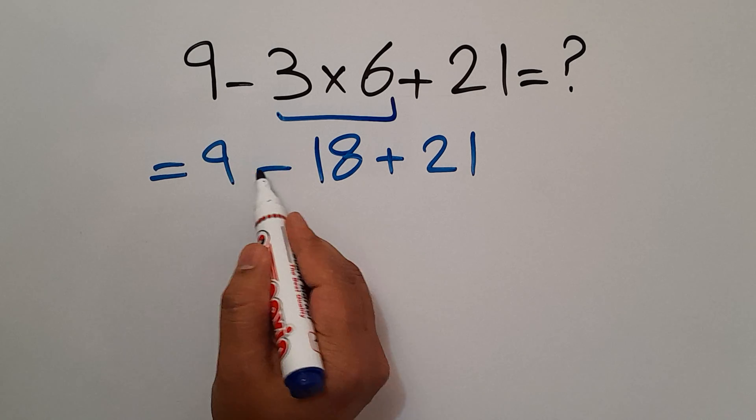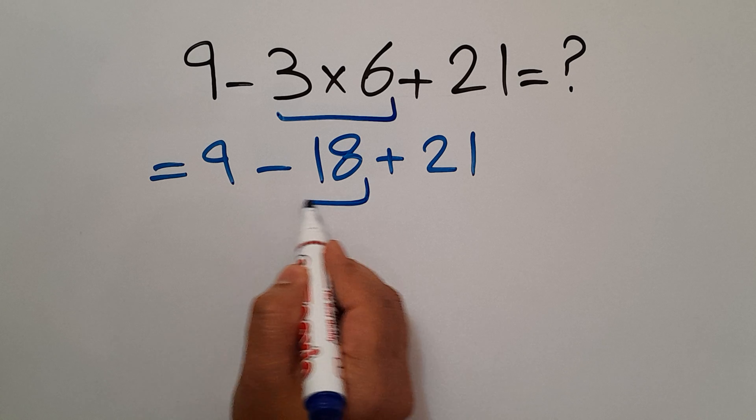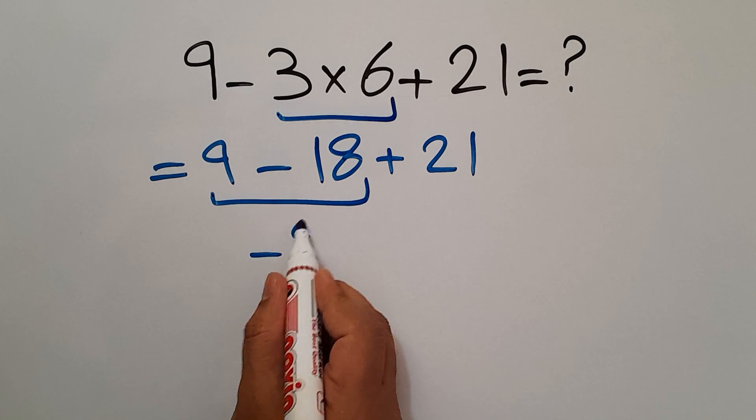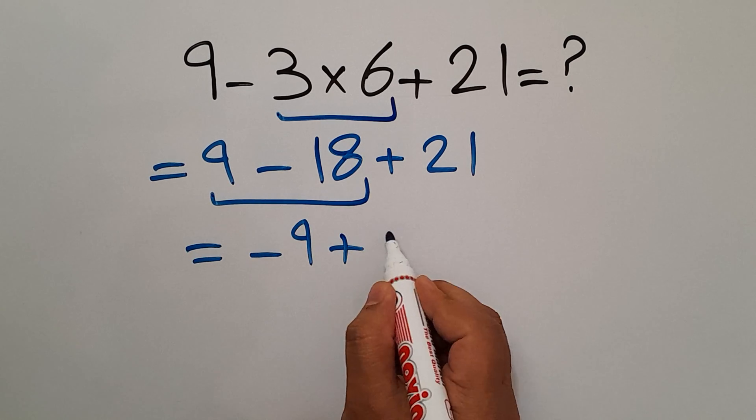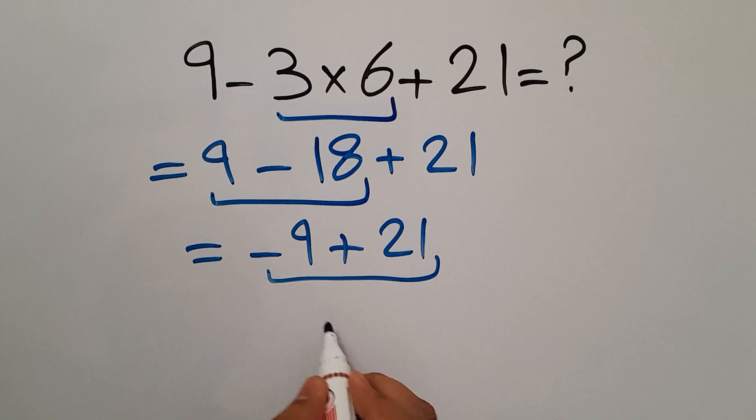So first, this subtraction: 9 minus 18 gives us negative 9. So negative 9 plus 21, which equals 12.